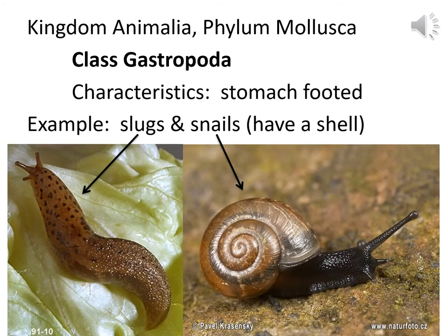Snails and slugs are going to be in Class Gastropoda. 'Gastro' refers to stomach and 'poda' refers to feet, so it literally says stomach-footed. Technically, slugs don't have a shell while snails do, but their mouth connected to their stomach tends to be along the ground. Their mouth has a rasping organ that scrapes up food — so they're kind of licking the sidewalk. Their foot has their mouth connected to their stomach.